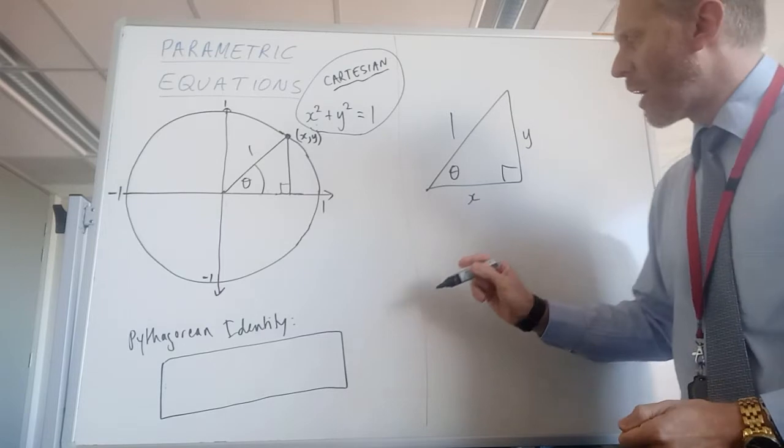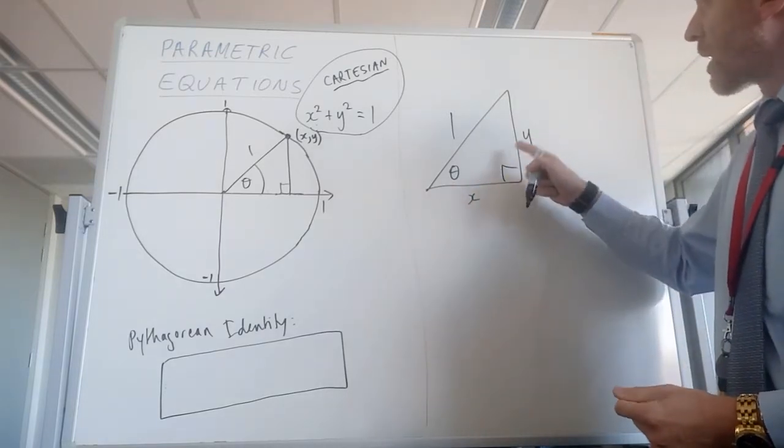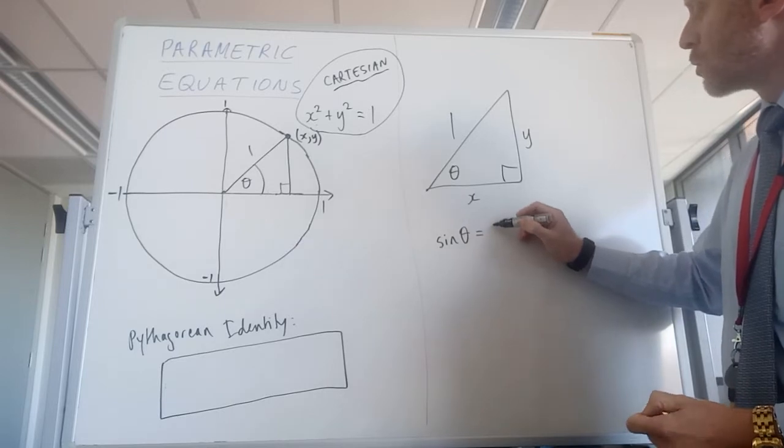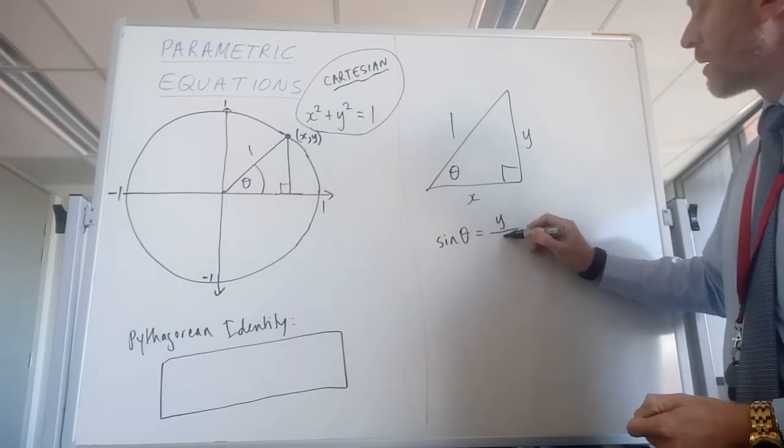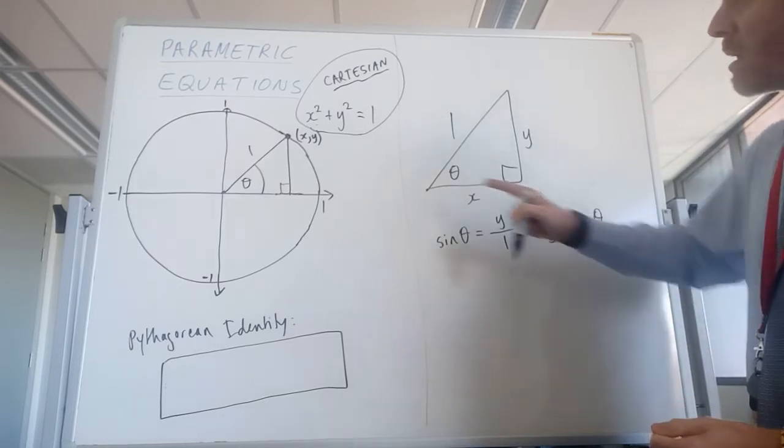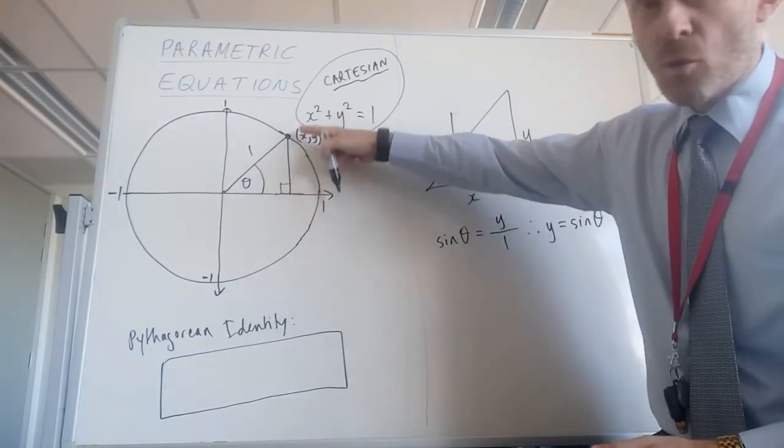So, thinking about SOH-CAH-TOA, we could come up with this equation, that sine theta equals the opposite side over the hypotenuse, therefore y equals sine theta, and so that distance is y.